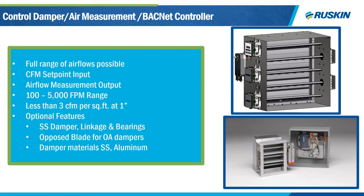The combination of a damper with an air measurement station and controller in one unit is something Ruskin does best as our Airflow IQ. Any Ruskin control damper can be combined with our advanced thermal dispersion air measurement probes in a 15-inch sleeve with a modulating actuator, providing air measurement with controls from Ruskin. Electronic air measurement can control airflow as low as 100 feet per minute, and velocity pressure can control airflows as low as 300 feet per minute — either can work up to velocities as high as 5,000 feet per minute. When paired with our CD50 damper, this is a low-leak Class 1A damper with less than 3 CFM per square foot leakage at 1 inch of water column. We recommend an opposed blade damper for outside air applications to get the best control at the lowest flows.